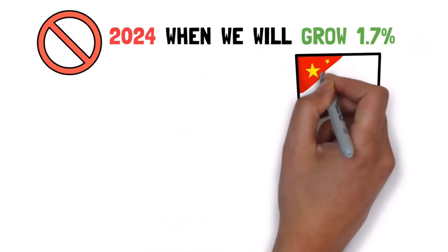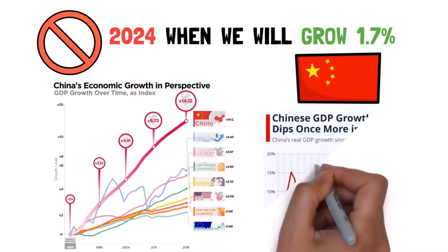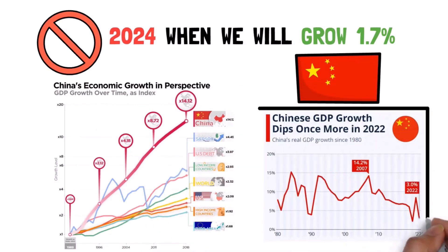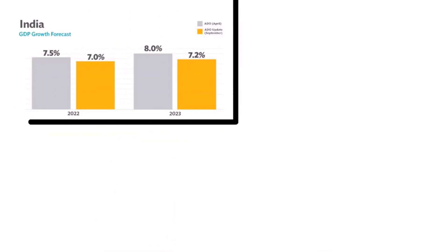Now, China by comparison, which is usually the global leader in economic growth, grew only 3% in 2022. India by comparison, though, is going to grow 6%.